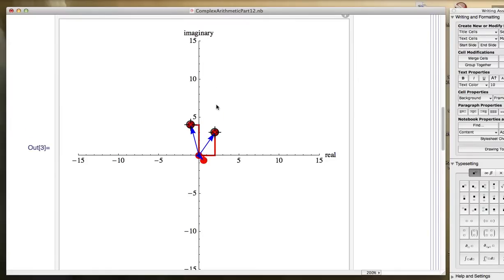Now if I change this point, I'm going to change the numerator. Let's move it farther out so that the quotient will be further from the origin.